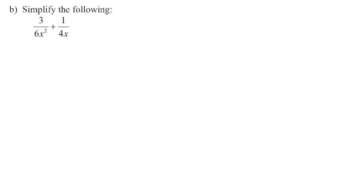Step one: factor all numerators and denominators. We're going to bracket any binomials, and we don't have any, so there's nothing we can factor in this first question. Step two: we need to determine the lowest common denominator. What's the smallest number that 6 and 4 will both divide into evenly? It's going to be 12. And then looking at the variables, we have an x squared and an x — the smallest that both divide into evenly is x squared.